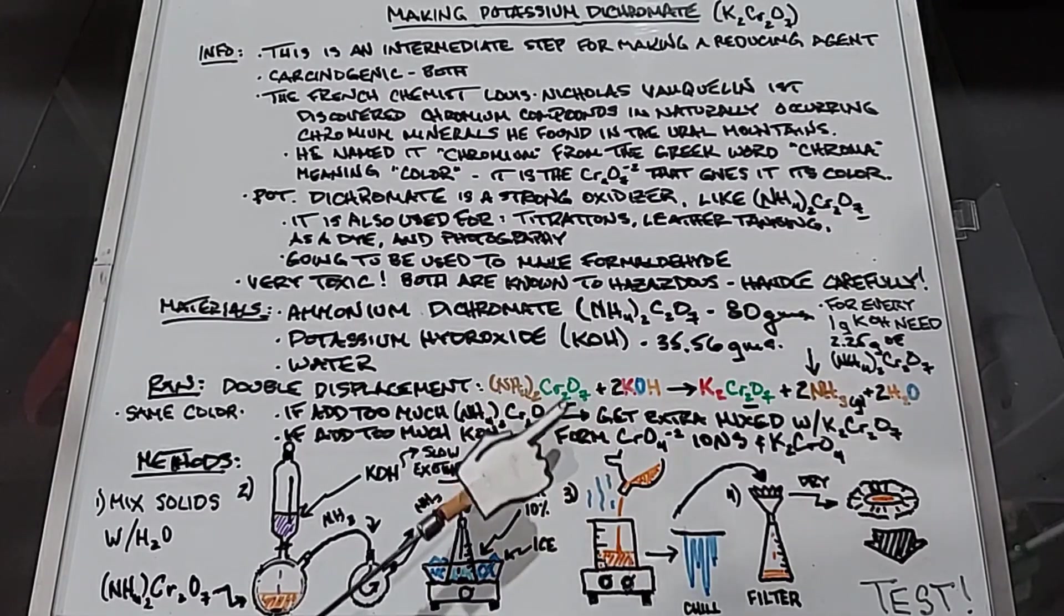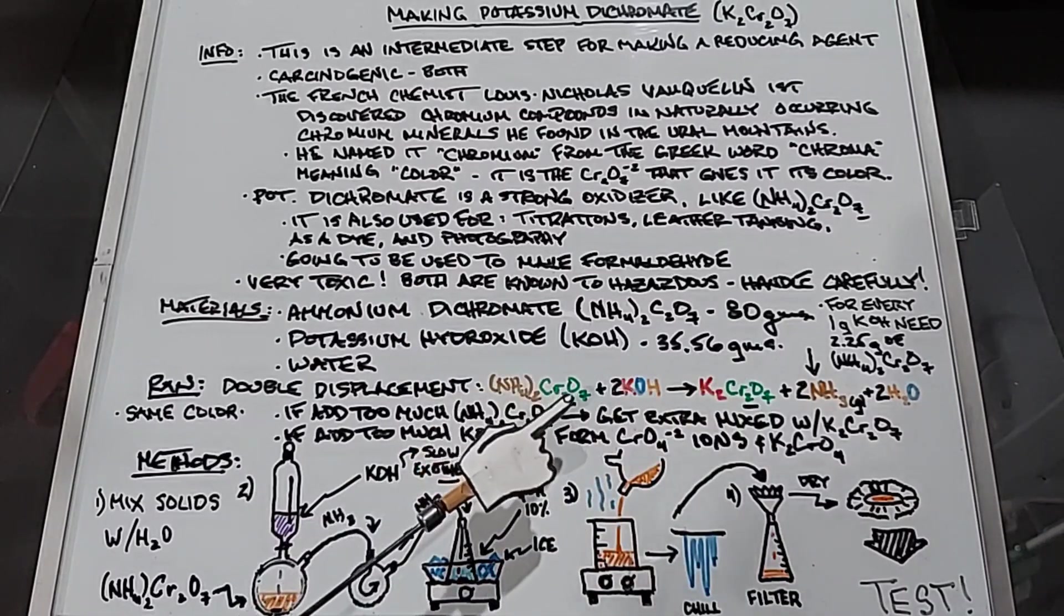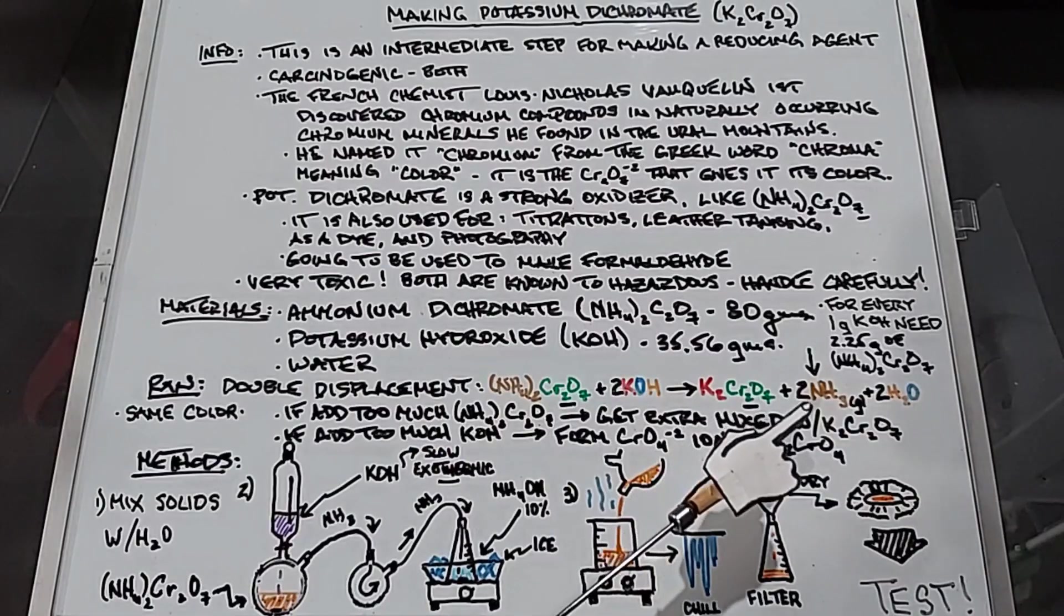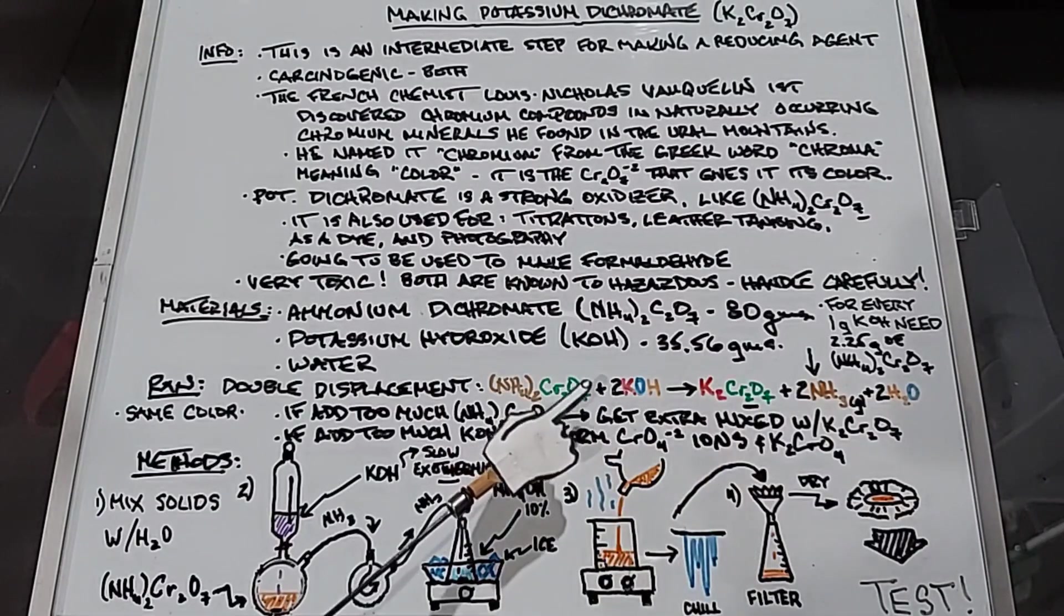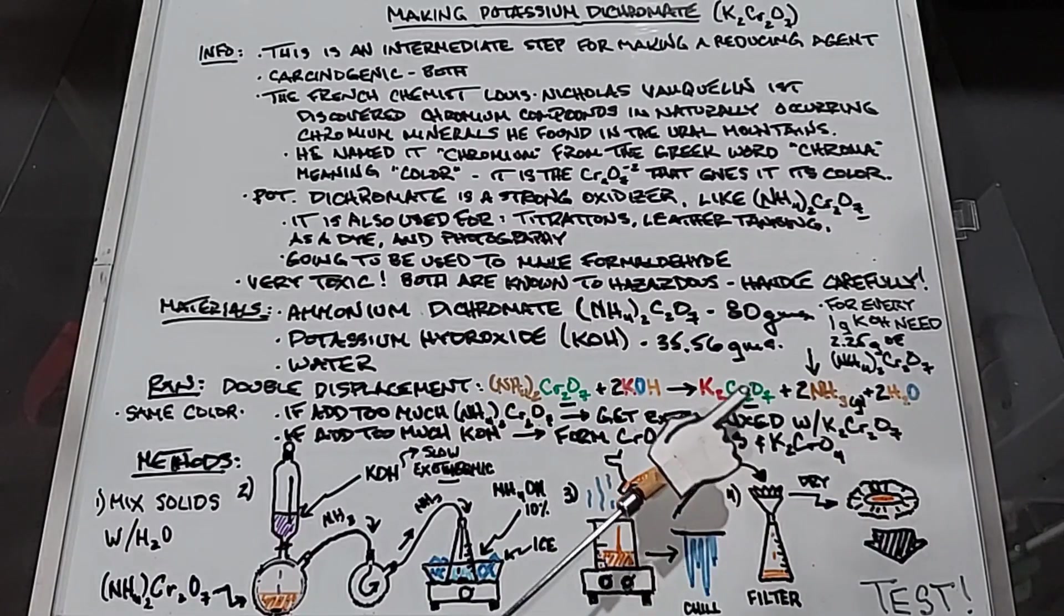Because the chromate ion, the Cr2O7, is the same in both of these, they look identical. This is going to be an unusual reaction because we're not going to see any change in the color of these crystals, which will look exactly like these crystals. So that should be interesting, but it also means that at the end of this, we need to test what we have.